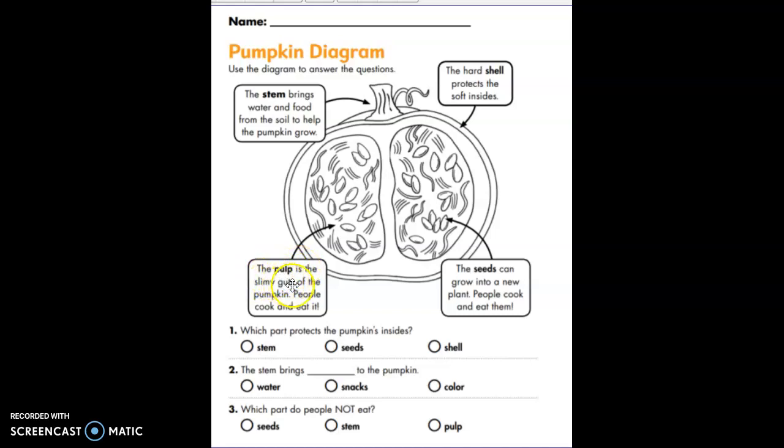The pulp is the slimy guts of the pumpkin. People cook and eat it, this part. The seeds can grow into a new plant. People cook and eat them.